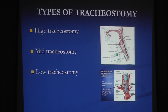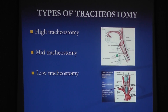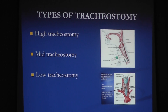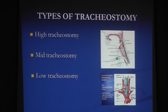There are three types of tracheostomy based on the anatomical site of the opening. High tracheostomy involves creating the opening at the first and second tracheal rings. Mid tracheostomy involves the third and fourth rings. Low tracheostomy involves the fifth, sixth, and sometimes seventh tracheal rings.